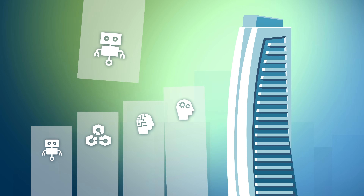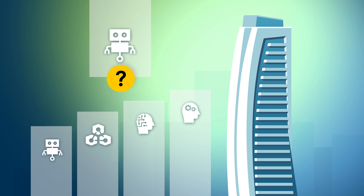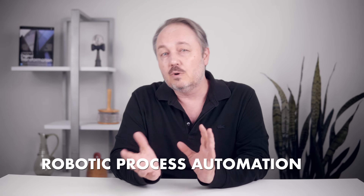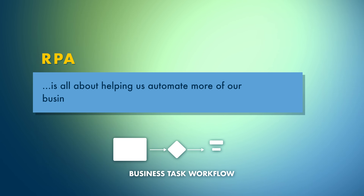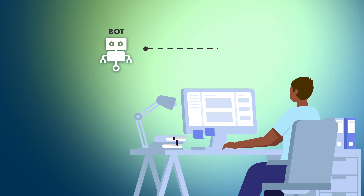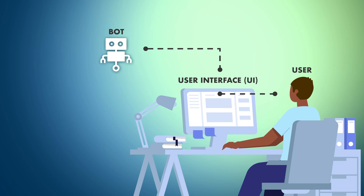What is RPA and how does it fit within a digital business solution? Robotic process automation, or RPA, is all about helping us automate more of our business tasks. It introduces software programs called bots that can interact with the user interfaces, or UIs, of other programs that were originally designed for use by humans.